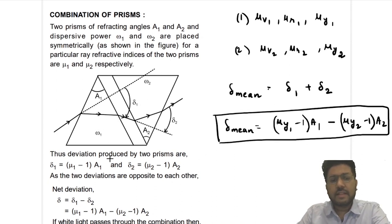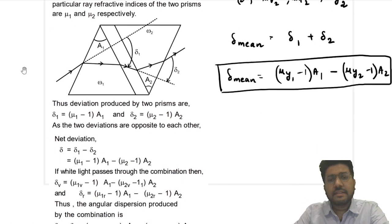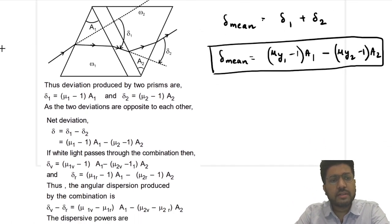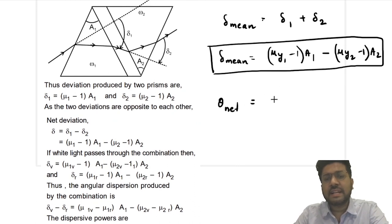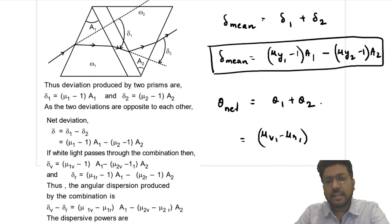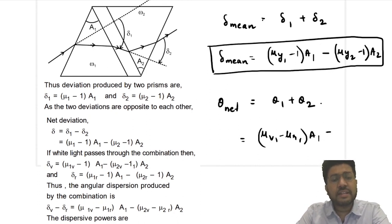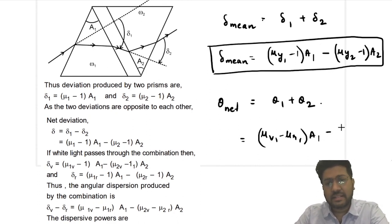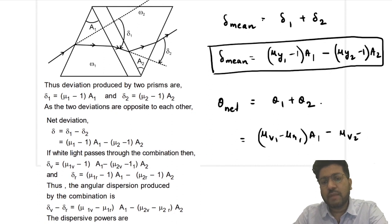Now there is one more term: net angular dispersion. θ_net = θ₁ + θ₂ = (μ_v1 − μ_r1)·A₁ minus (μ_v2 − μ_r2)·A₂, because they are oppositely oriented.